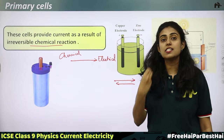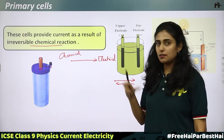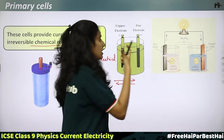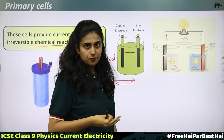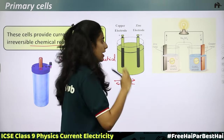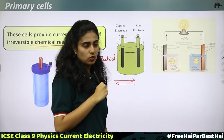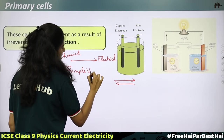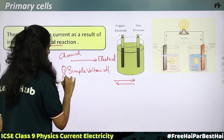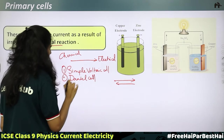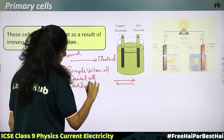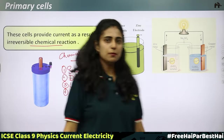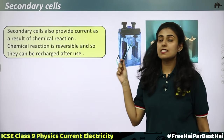Different types of primary cells include the simple voltaic cell, Daniel cell, Leclanché cell, and dry cell. These are examples of primary cells. Secondary cells, on the other hand, provide current as a result of a reversible chemical reaction. The cell is first charged, during which electrical energy is converted into chemical energy.